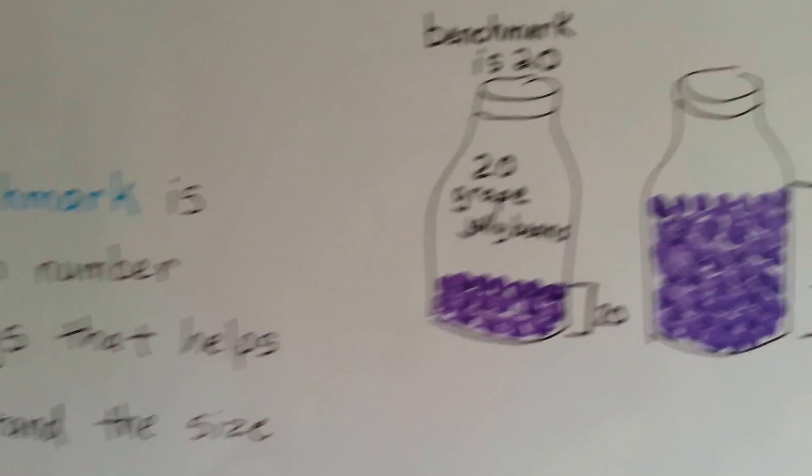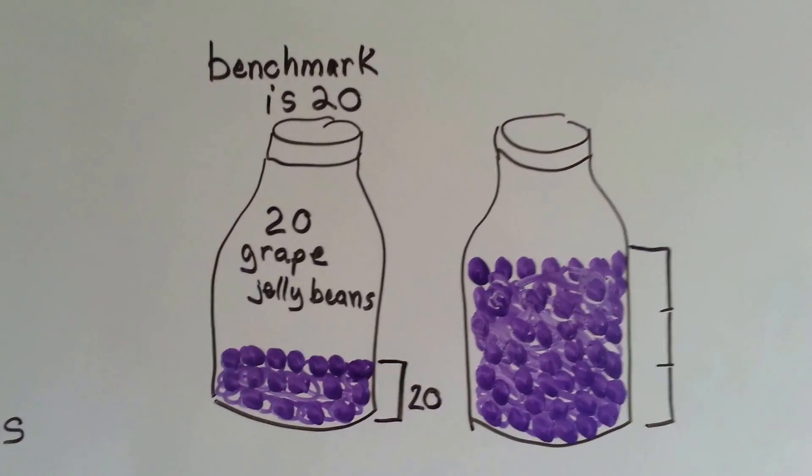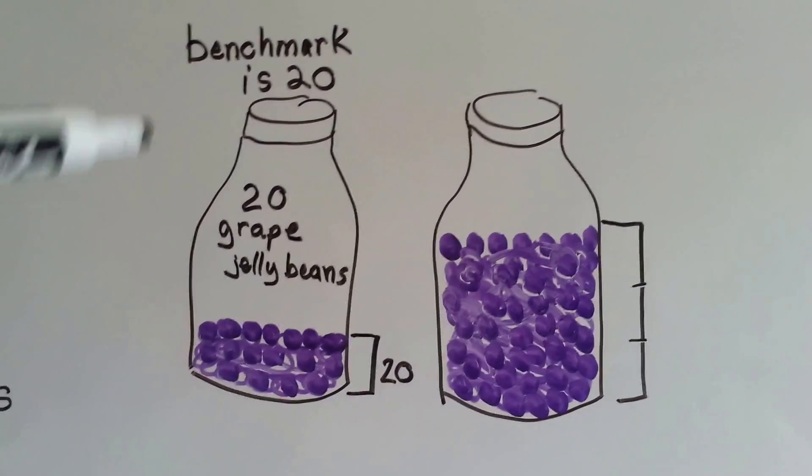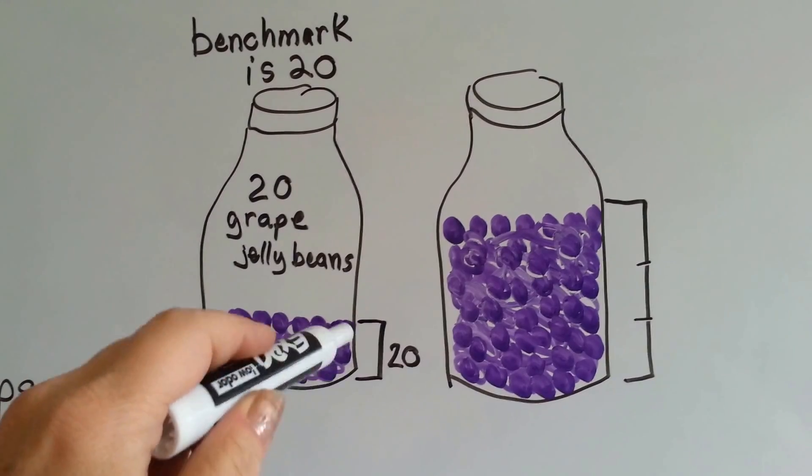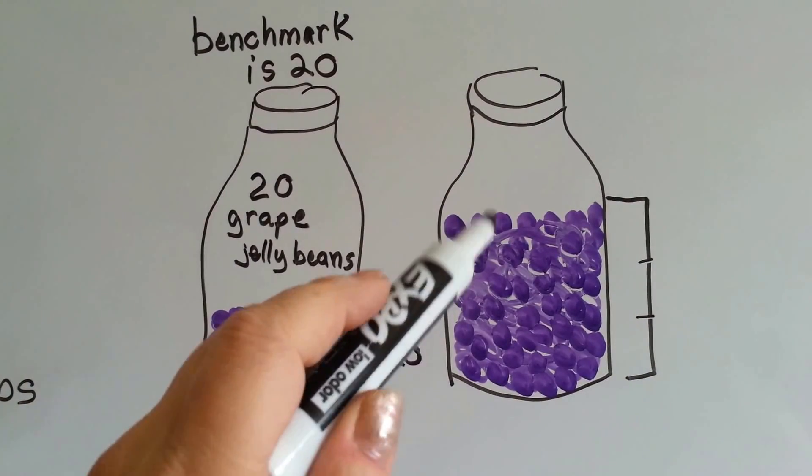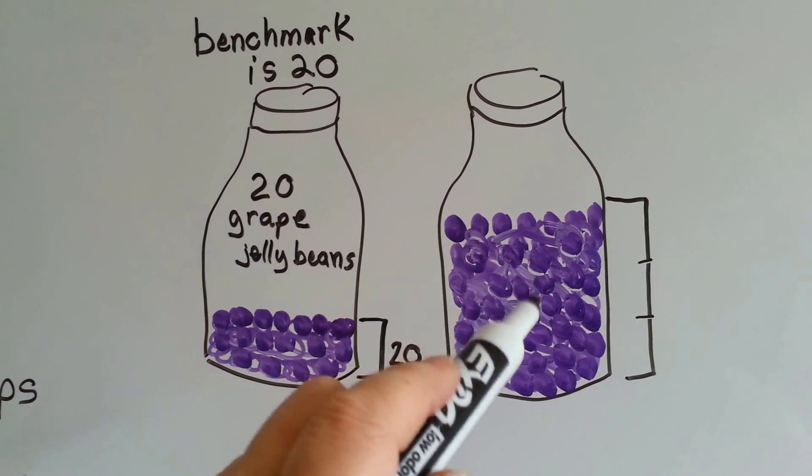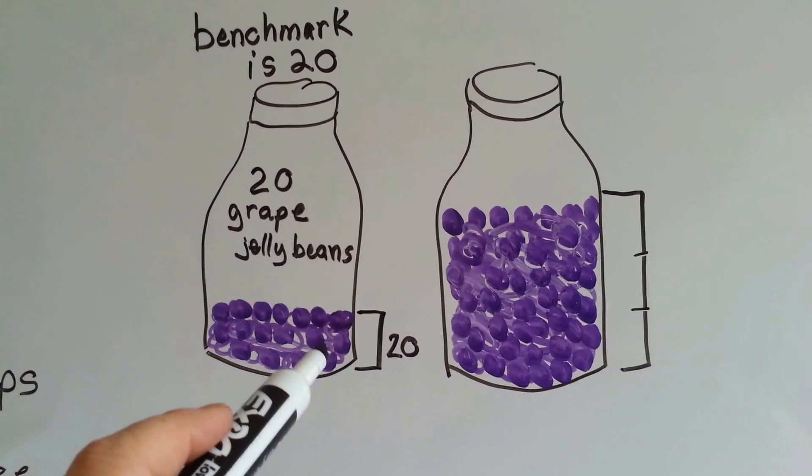In one of my previous videos, I showed you a jar of lemon drops. So here's our benchmark jar. It says that this amount is 20 grape jelly beans. So if you wanted to estimate how many grape jelly beans were in this jar, you could use the benchmark.